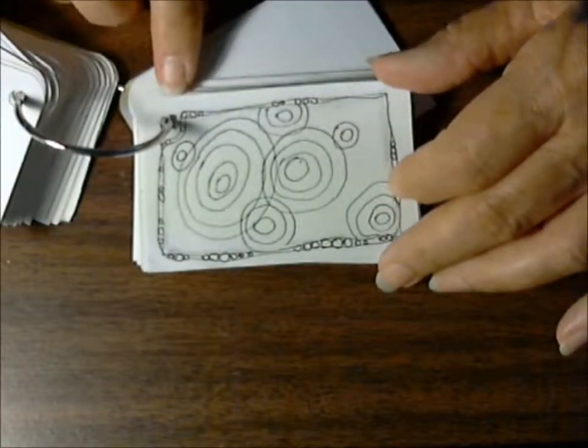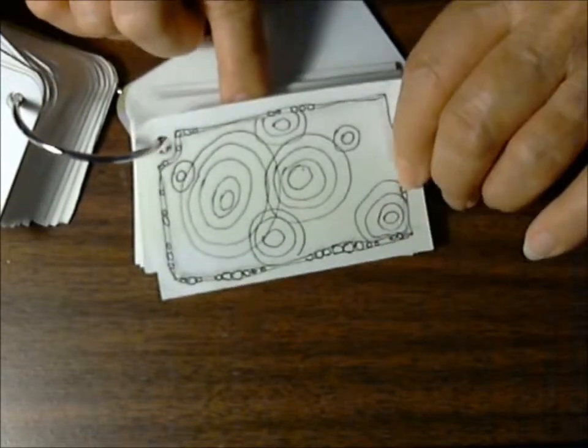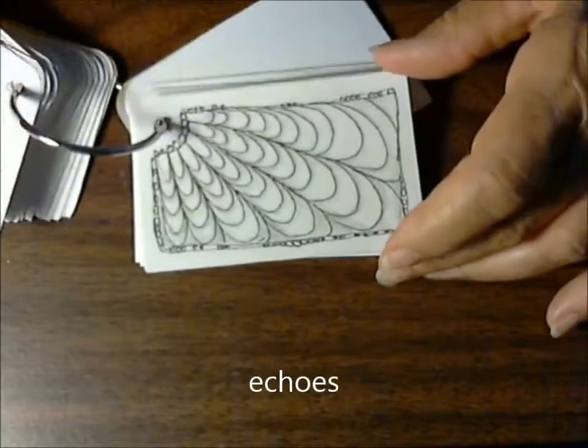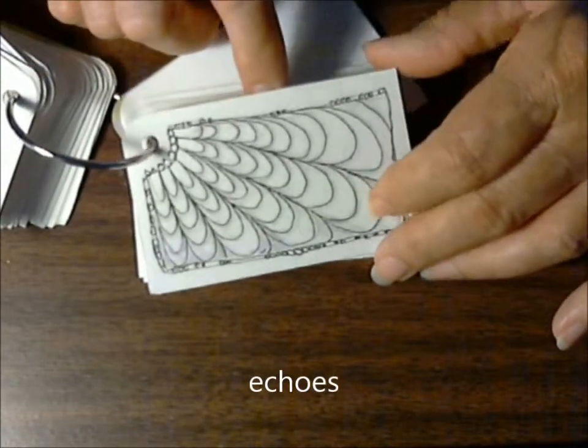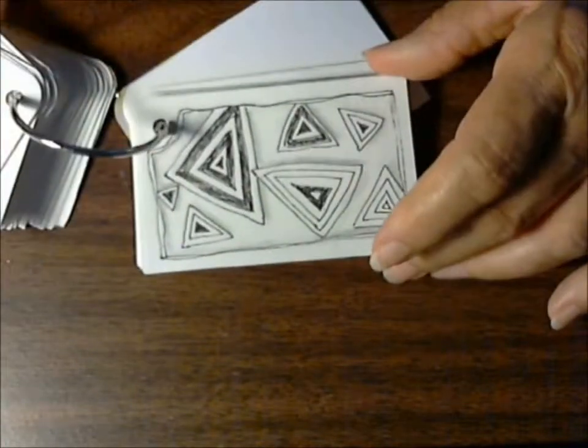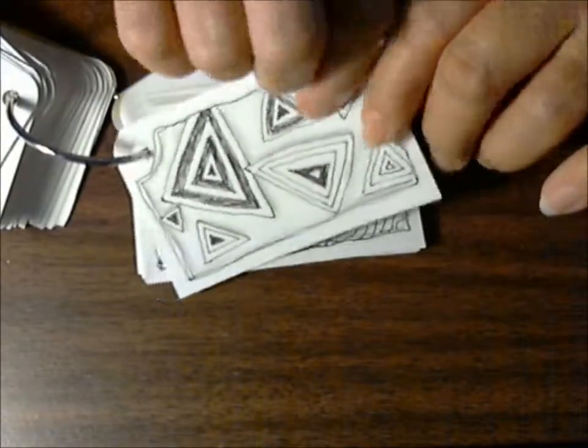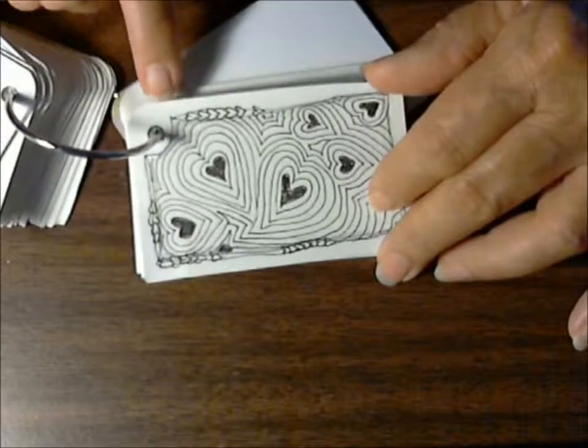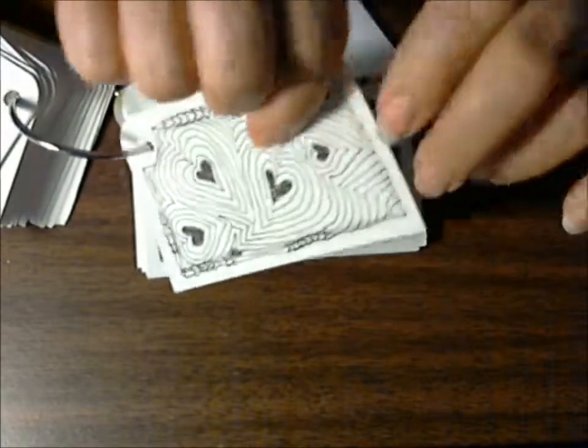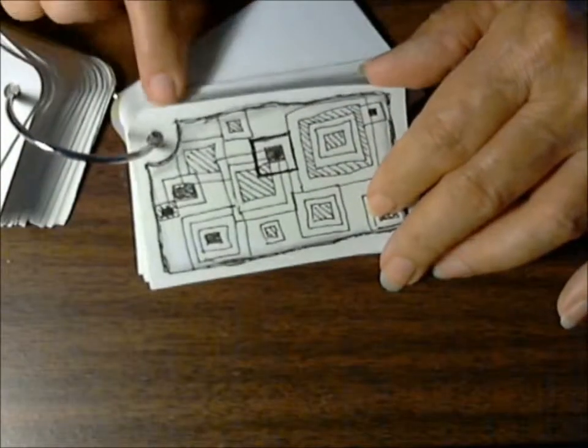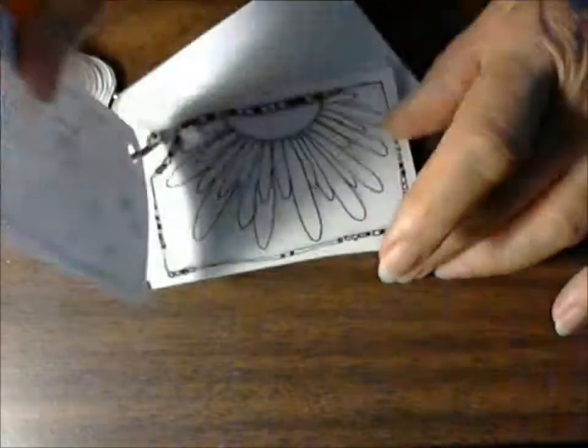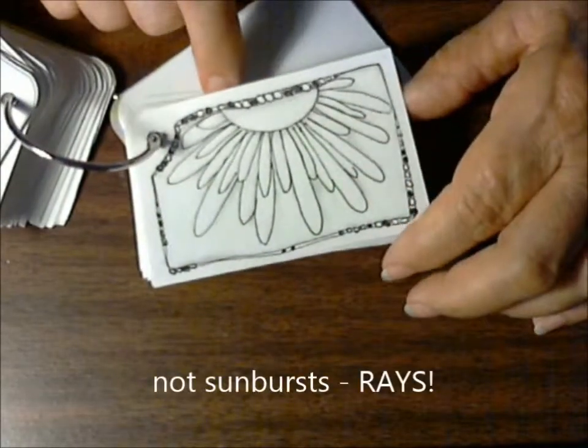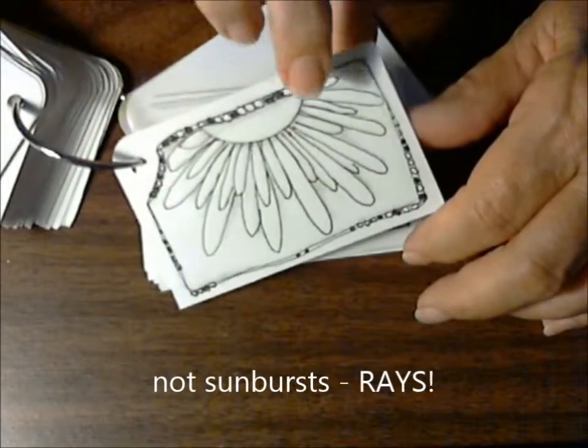This one was echoes, echoes of the circles, echoes of this shape, echoes of the triangles, echoes of the hearts, echoes of the squares, and sunbursts. I really enjoyed sunbursts. I think I like that one of the best.